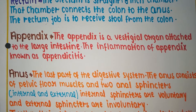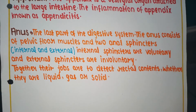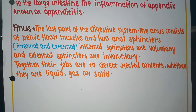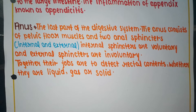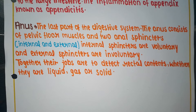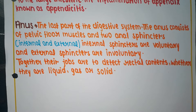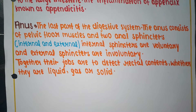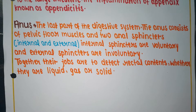The anus is the last part of our digestive system. The anus consists of pelvic floor muscles and two anal sphincters. The internal sphincter is voluntary and the external sphincter is involuntary.